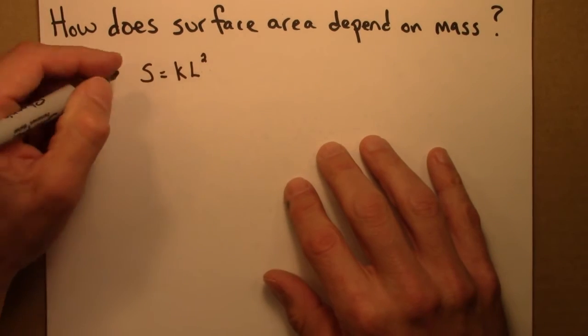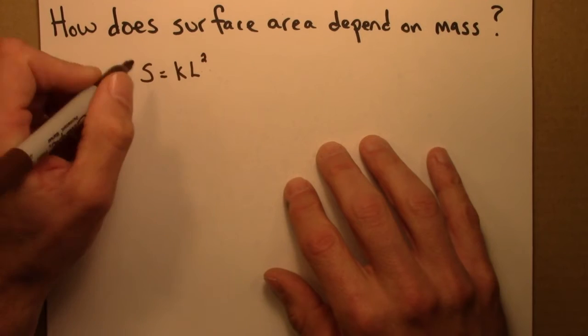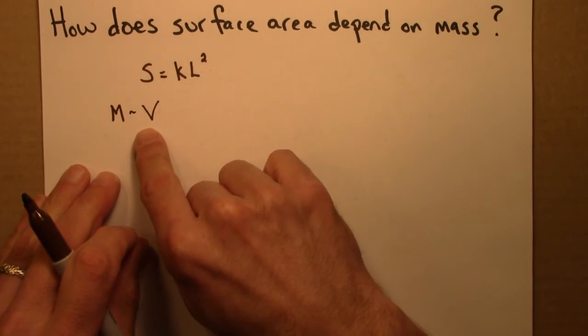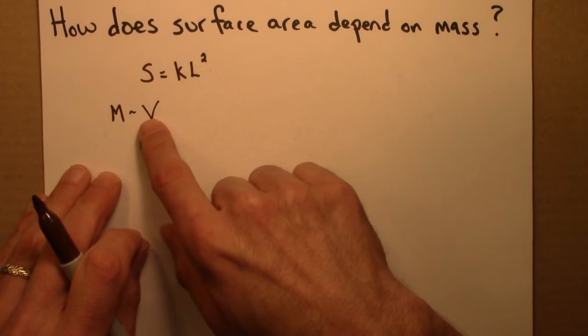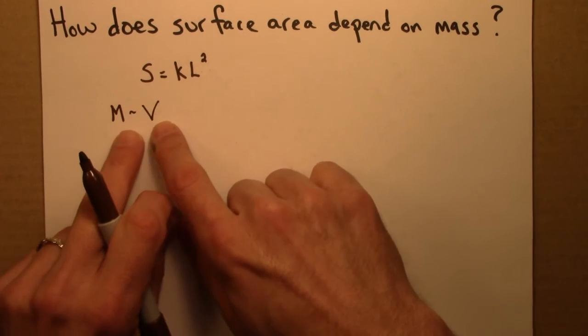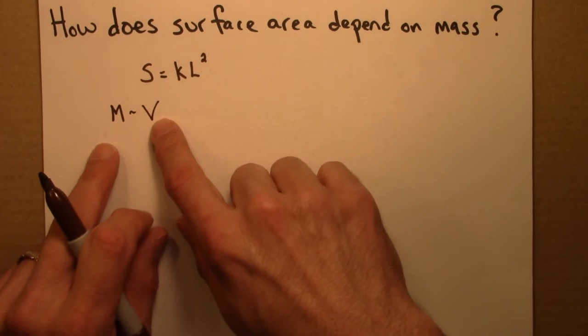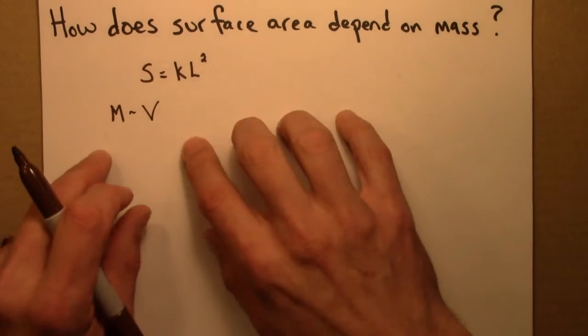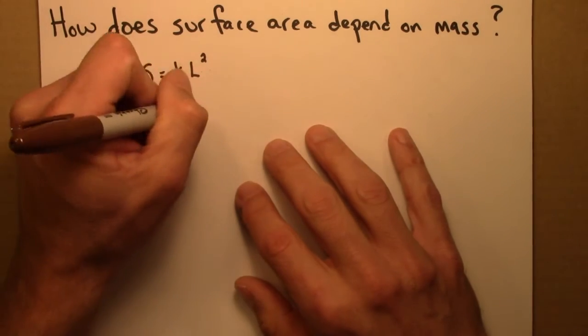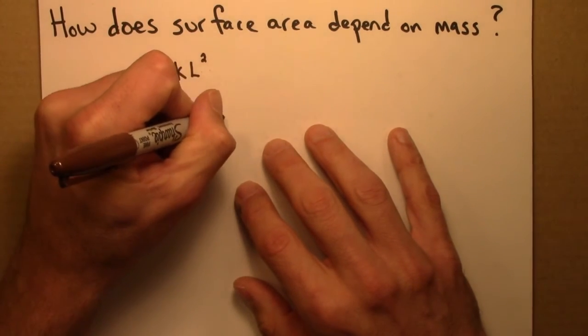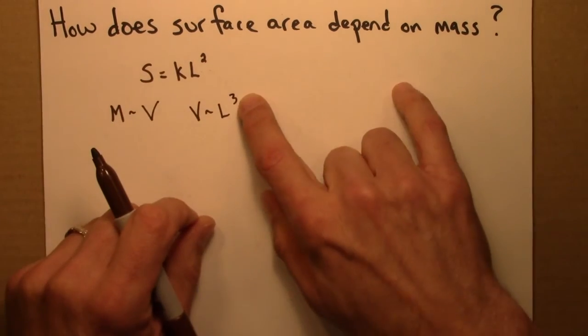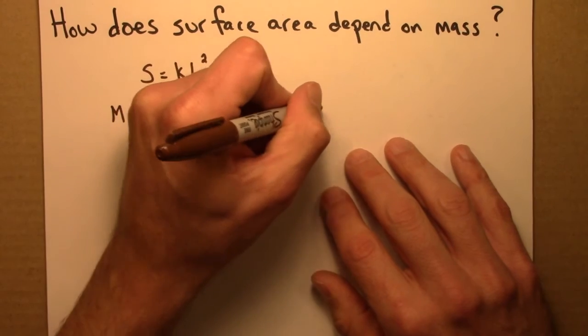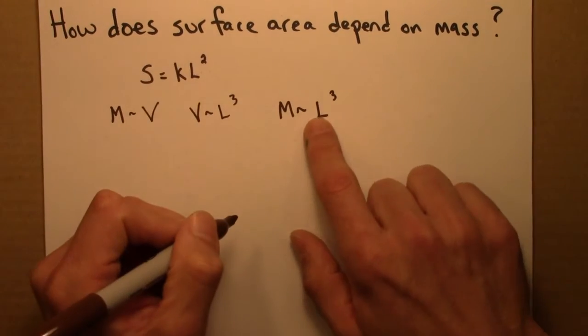Now mass is proportional to volume. Maybe I'll use this squiggle for proportional. So if a creature's volume doubles, its mass doubles. What about volume? Volume is proportional to L cubed. Volume is a three dimensional thing, so that means mass is proportional to L cubed.